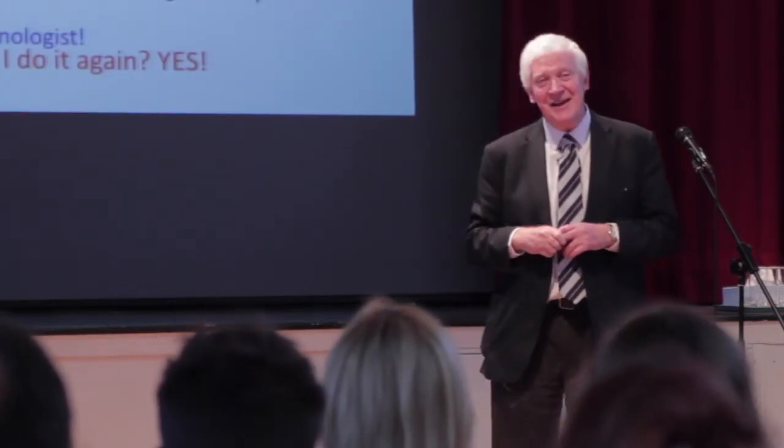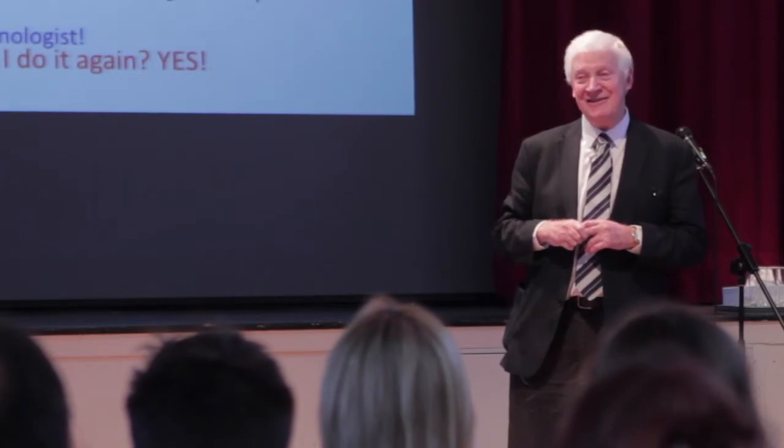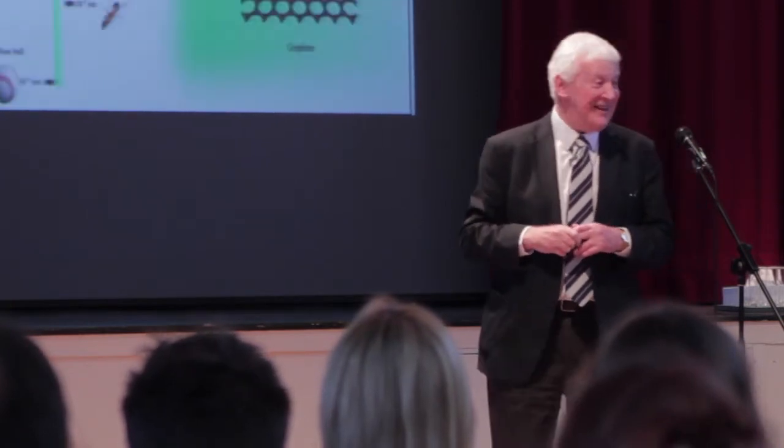Calling myself a nanotechnologist, I felt I had to spend a little bit of time telling you what nanotechnology actually is. So this is the size of things. You can go from things like, this is from an American source obviously because it's got a baseball at the bottom, going through ants, hares, red blood cells, bacteria, viruses. And at the virus size we're getting into the nano world.